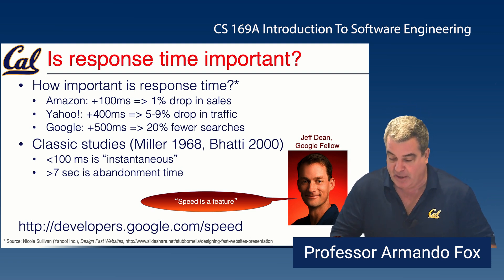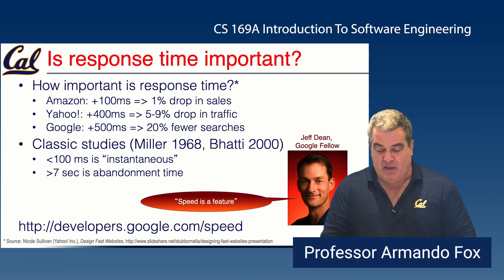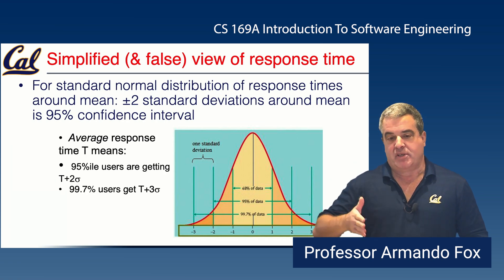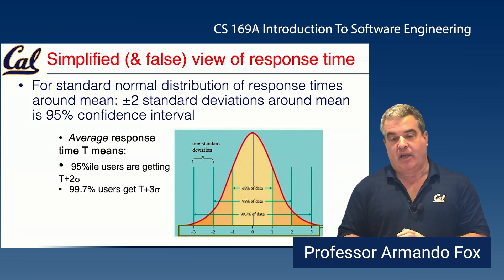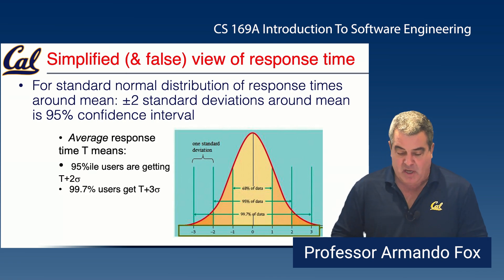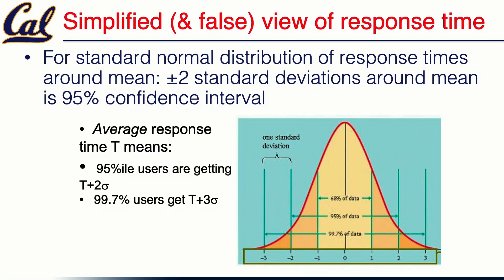Let's talk a bit more about response time. If people have a naive, simplified view of response time, it's something like this: response time follows a bell curve — a standard normal distribution. You look at the mean, look at one or two standard deviations around it, and evaluate a site's responsiveness that way. As long as the mean is compatible with user expectations and the curve doesn't spread too widely, you can say 95% of users are getting something within two sigma of the mean.